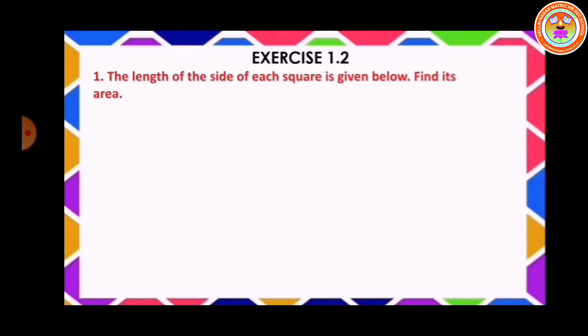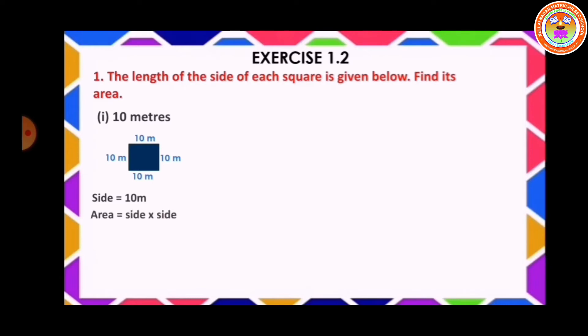Now let's go to exercise 1.2, first question. The length of the side of each square is given below. Find its area. First sum: they have given the value of one side of the square as 10 meters. Side is equal to 10 meter. Area of the square is equal to side into side, that is 10 meter into 10 meter. The area is equal to 100 square meter.